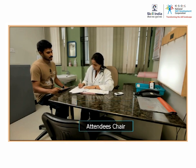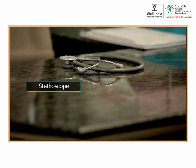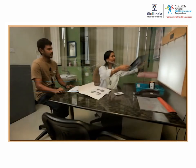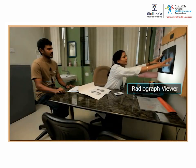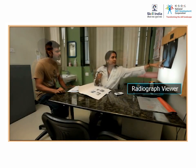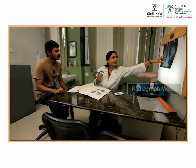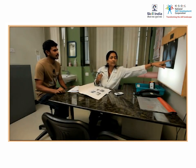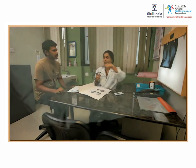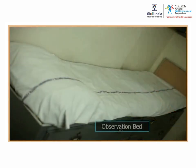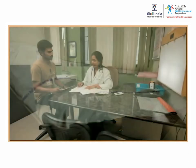The consultation room also has an attendee's chair for the patient's attendant, instruments like a stethoscope, and equipment like a radiograph viewer to view the X-rays of the patient. The OPD consultation room also consists of an observation bed for examination by the doctor.